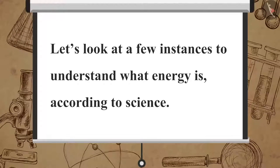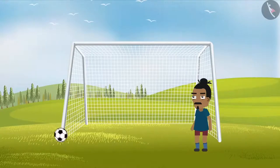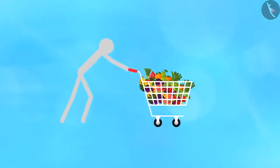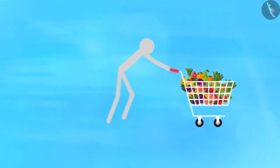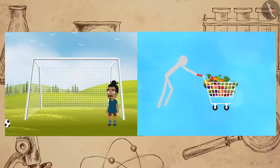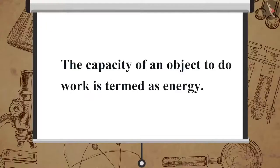Let's look at a few instances to understand what energy is according to science. Suppose you kicked a football and it rolled on the ground, or you pushed a trolley and it displaced up to a certain distance. In both of these situations the object has acquired the capability to do work, and the capacity of an object to do work is termed as energy.